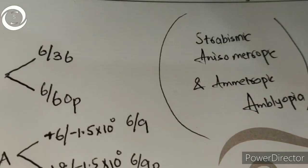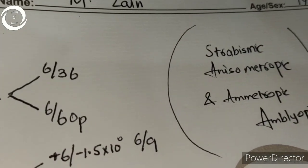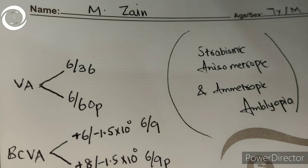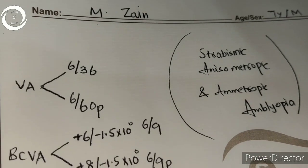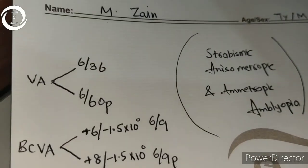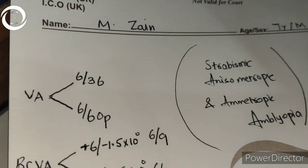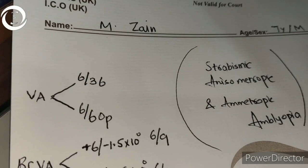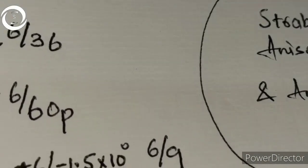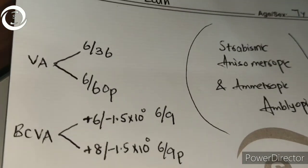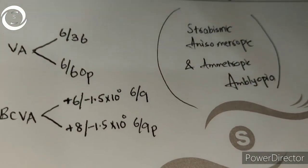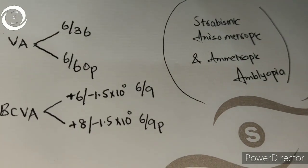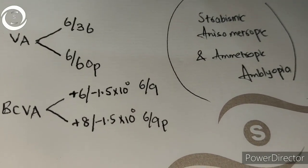We have given him glasses and after one month we will reassess his refractive error to see whether we need to correct the strabismic component surgically or whether it can be improved with glasses alone. Whenever you find such high refractive error, always perform cycloplegic refraction, first give a trial of glasses, and then consider penalization and surgical procedures as well. We will closely follow this patient. Thank you.